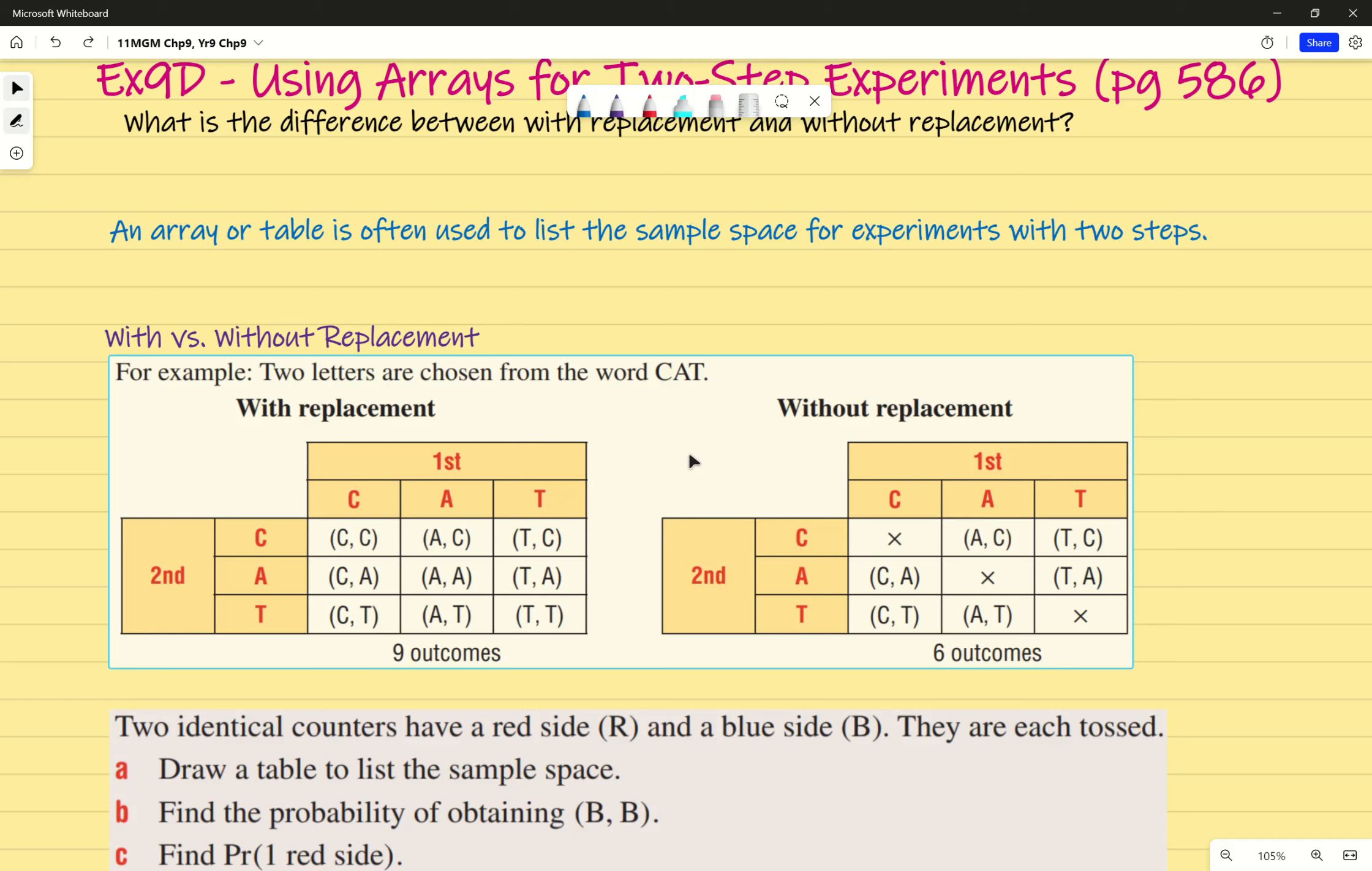You could get, for example, C, A. That makes sense. You can take it out and put it back in. There are nine different outcomes. Three letters, so if it's twice, nine different outcomes. And it makes sense because there are three options, and the second time around there are three options again. So three times three is nine.